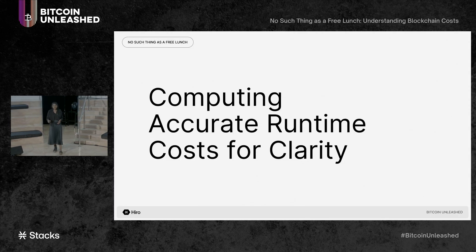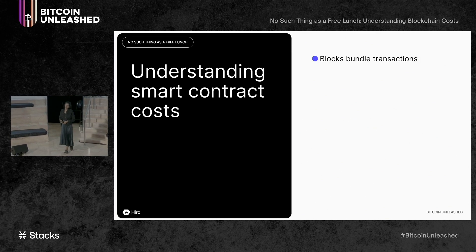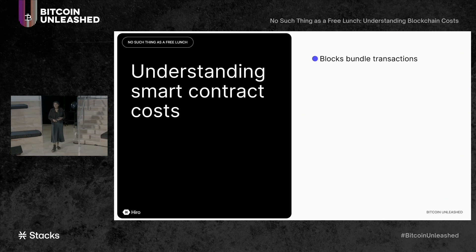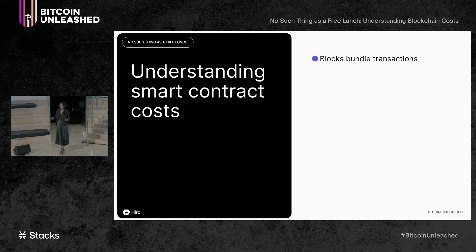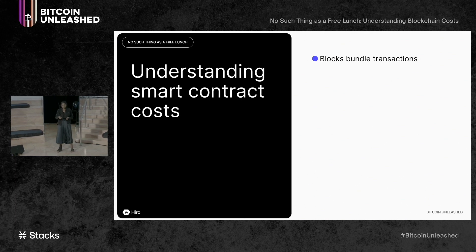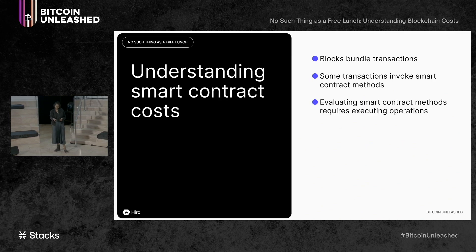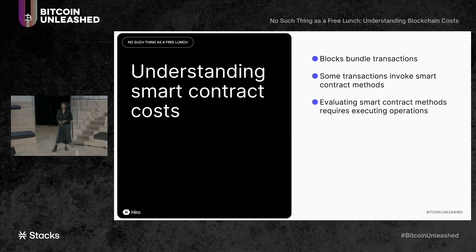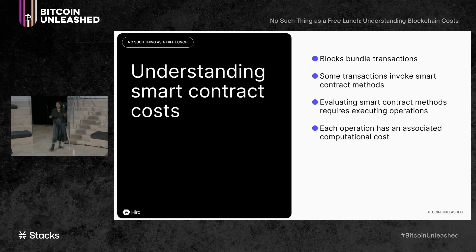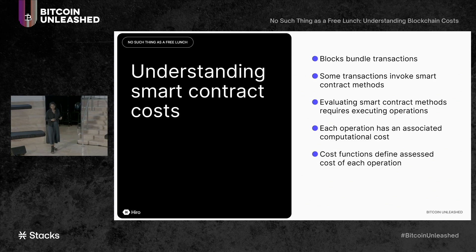Diving into the first project — computing accurate runtime costs for Clarity — let's understand a little bit more about how smart contract costs work. Stacks blocks bundle transactions. There are many different types of transactions on the Stacks blockchain: you can transfer STX from one user to another, publish your smart contract, or call a function of a smart contract. Some transactions invoke smart contract methods, and evaluating these smart contract methods requires executing operations on the node. Each operation has an associated computational cost, and the node keeps track of this in the background as it packages blocks.